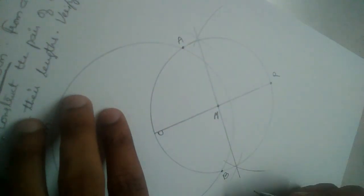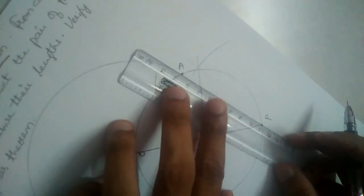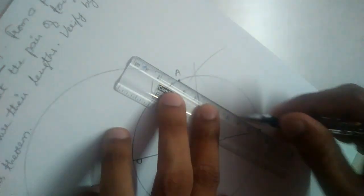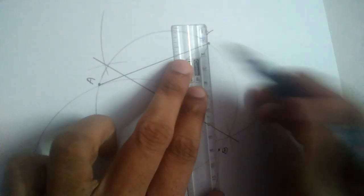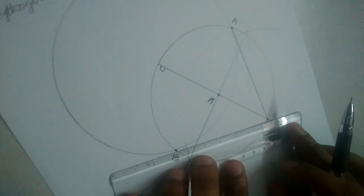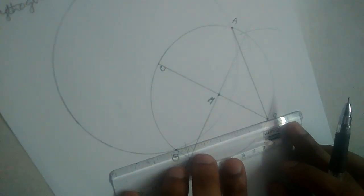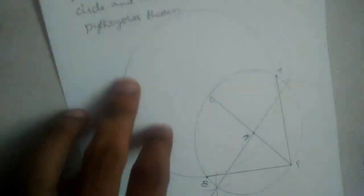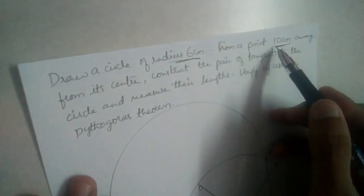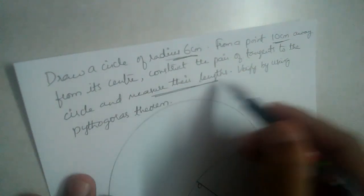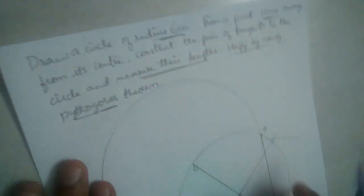The two circles intersect at two points — let these be A and B. These are the points of contact. We join A with P and B with P to form the pair of tangents.